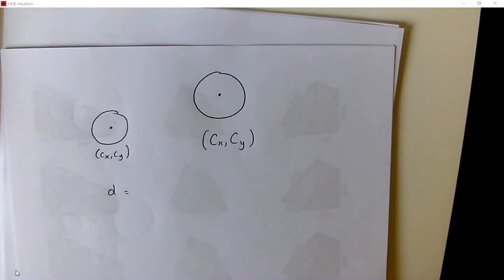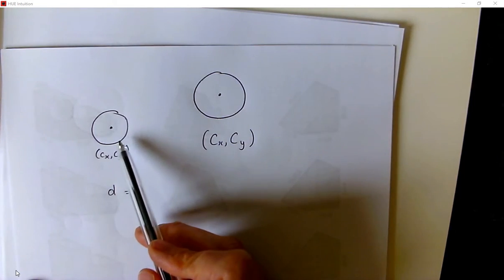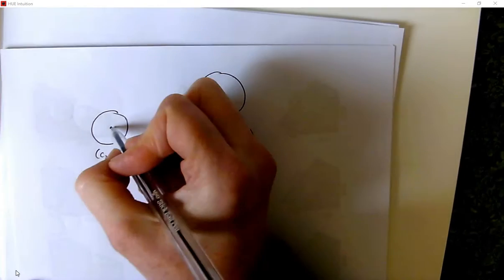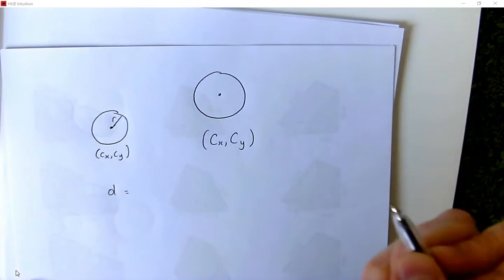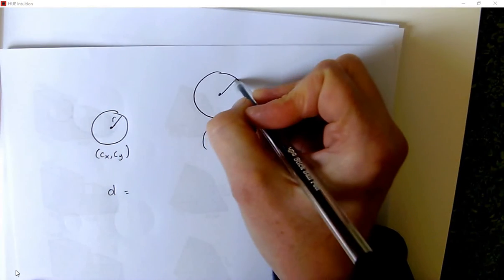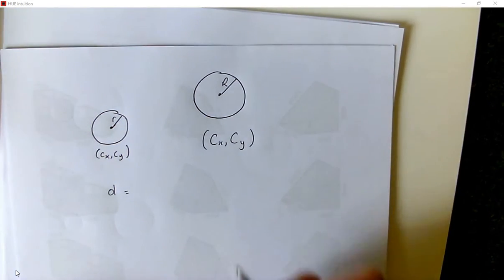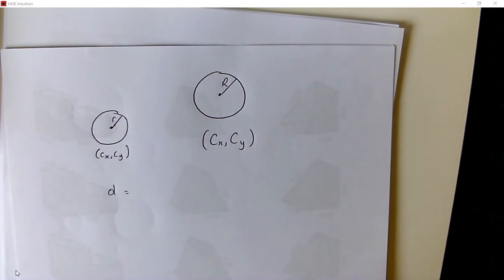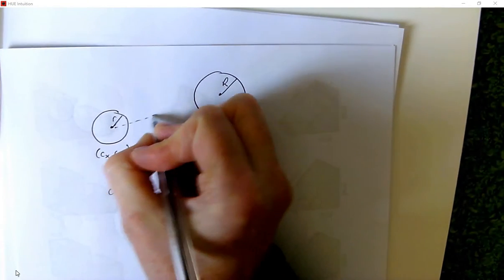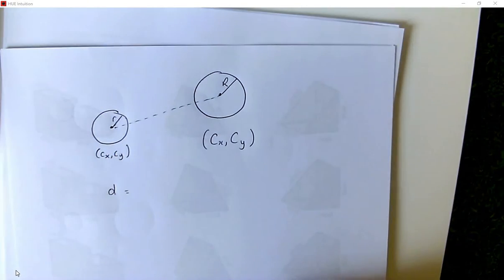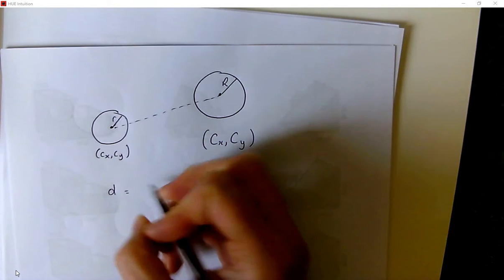I'm going to look at intersecting circles. I've got here two circles: a little circle with radius r and a big circle with radius R. The other measurement we're interested in is the distance between their centres — that distance there — and we can find it using Pythagoras.